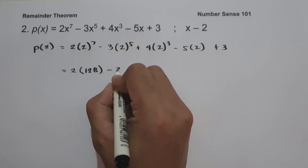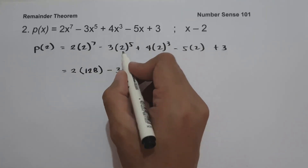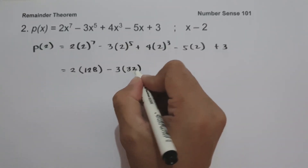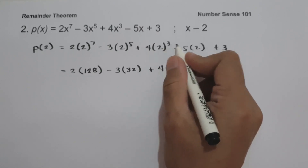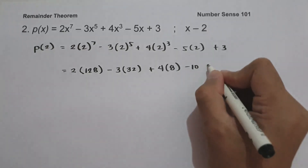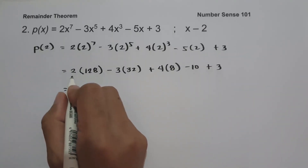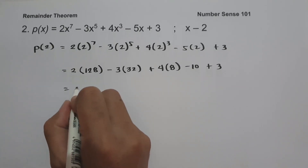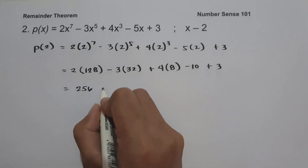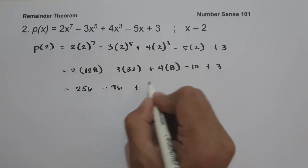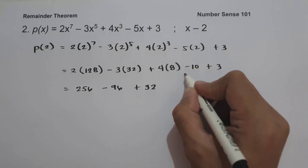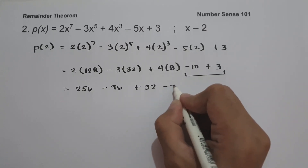Then 3 times 2 raised to 5: multiply 2 five times to itself, that is 32. Plus 4 times 2 raised to 3, that is 8. Negative 5 times 2 is negative 10, then plus 3. So we have: 2 multiplied by 128 is 256. Negative 3 times 32 is negative 96. 4 times 8 is 32. And negative 10 plus 3 is negative 7.